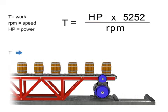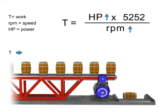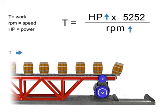Let's say we wish to keep torque constant but want to increase the production of barrels. If the torque or number of barrels on the conveyor belt remains constant but speed increases, then the horsepower of the motor also increases. In other words, a more powerful motor is required to produce the same amount of torque more quickly.